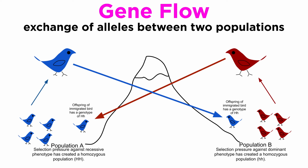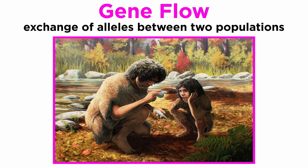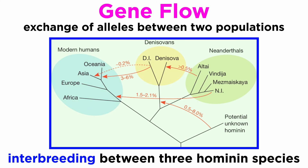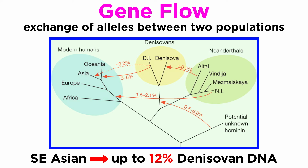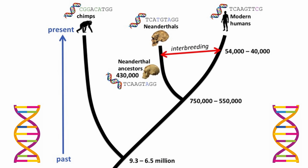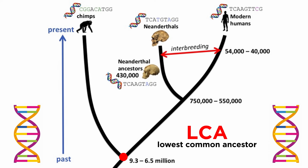Gene flow impacted our evolution as well. This mechanism involves the exchange of alleles between two populations, which was demonstrably rife within populations of hominin species we used to roam the earth with. Extensive sequencing of the ancient DNA of archaic humans, Neanderthals, and another species known as Denisovans, has revealed that these three species actually interbred. Today, if you have European ancestry, you may have up to 12% Denisovan DNA. Work with modern molecular clocks additionally suggests that the first species that diverged from the LCA, or lowest common ancestor of humans and chimpanzees, may have interbred as well, potentially for millions of years.